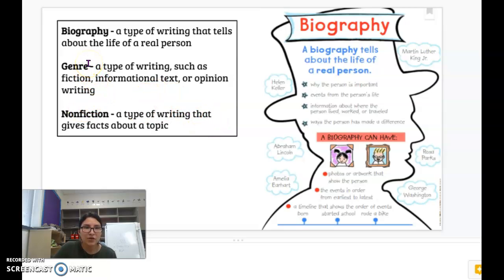Then we have genre. Go ahead and say the word genre. Genre. Good job. A type of writing such as fiction, informational text, opinion writing, biography, fantasy, fable, fairy tale. Just different types of writing. And then nonfiction. A type of writing that gives facts about a topic. So you'll be learning real information. And remember topics can be over people or things. This week our topics are over real people.